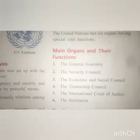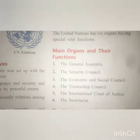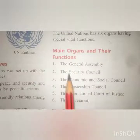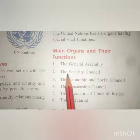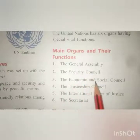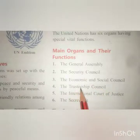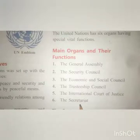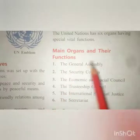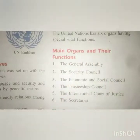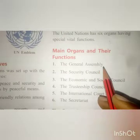The United Nations has six organs, each performing different functions. These are: the General Assembly, the Security Council, the Economic and Social Council, the Trusteeship Council, the International Court of Justice, and the Secretariat. We will study each organ's functions in our next lecture.